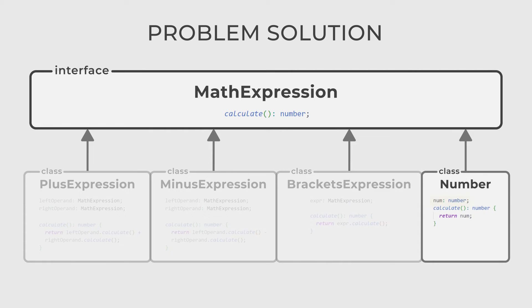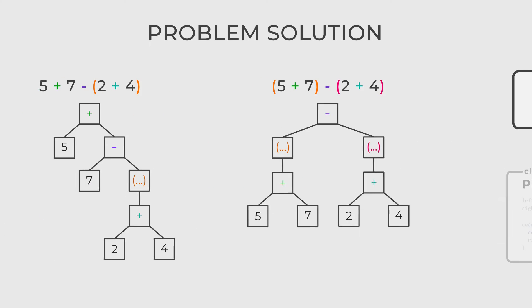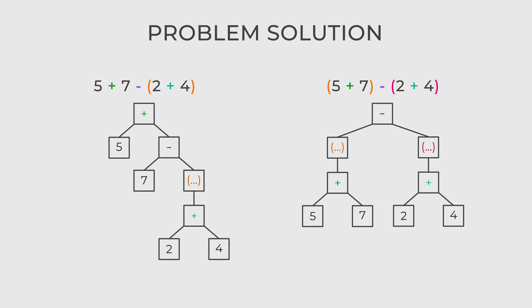The last class, number, contains a number and its calculate method returns exactly that number. You can easily interpret any expression containing plus, minus and brackets using these four classes.